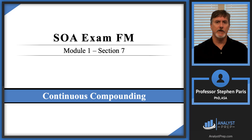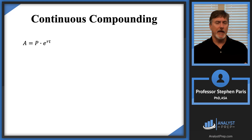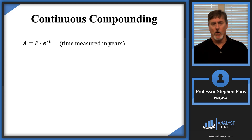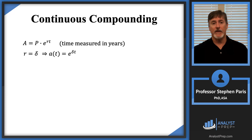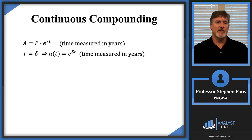With continuous compounding, I'm going to start off by stating the formula: A equals P times e to the RT. Time is measured in years when you see this formula. We actuaries don't use R as the rate; we use the lowercase Greek letter delta. Substituting delta for R and 1 for P gives the accumulation function for continuous compounding as e raised to delta T, where delta is the continuously compounded interest rate and time is measured in years.